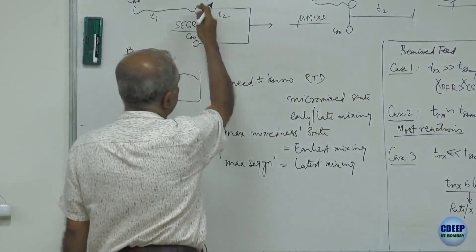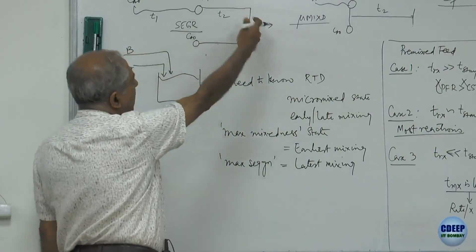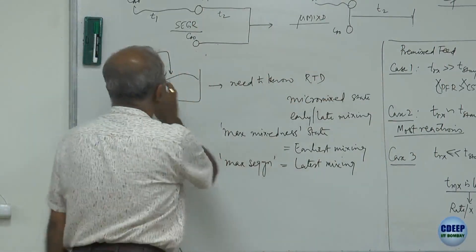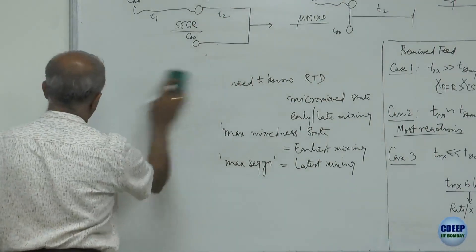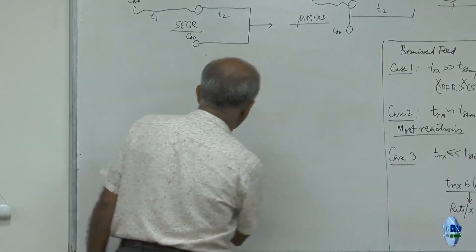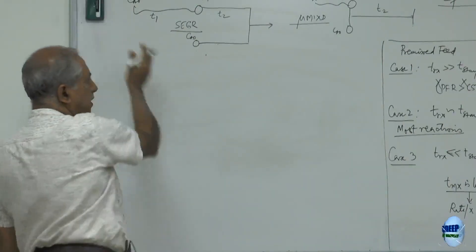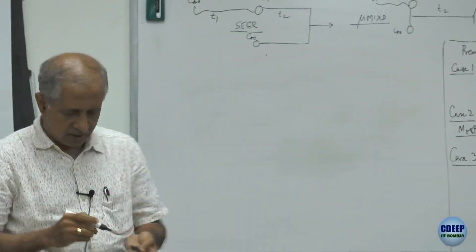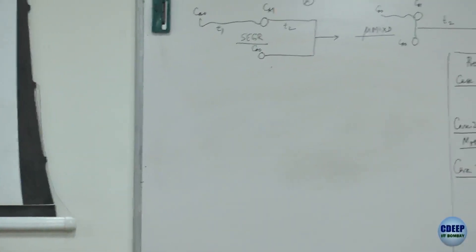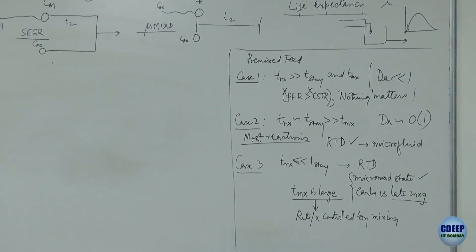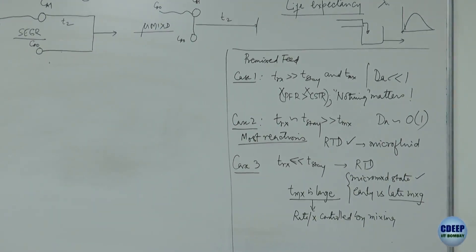In between these extremes, an intermediate micromixed state may exist where you cannot assign exactly which point in the life mixing is occurring. Only at the extremes can we relate the two concepts. One talks about how the mixing is locally, and the other talks about when it takes place. The maximum mixedness state corresponds to one extreme of micromixing — molecular level mixing — and corresponds to earliest mixing. The maximum segregation case, which is the integral of CA(t) times E(t) dt, corresponds to latest mixing.